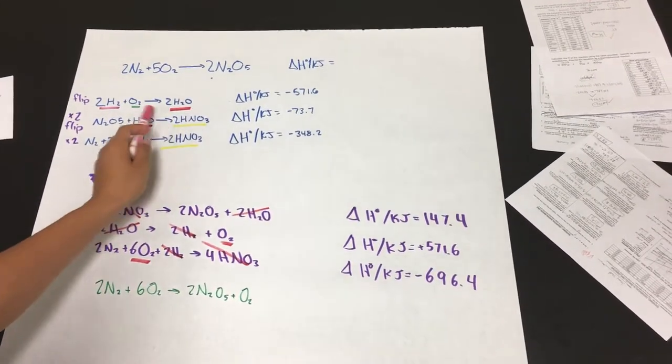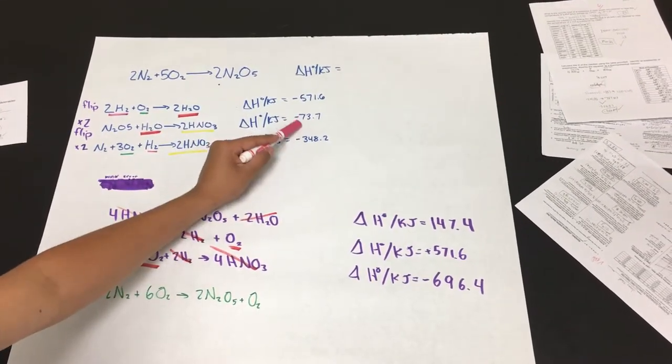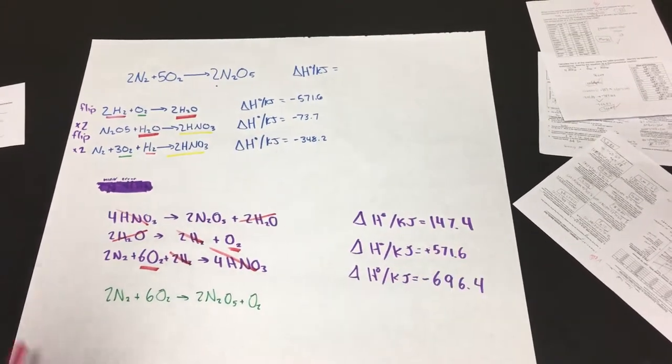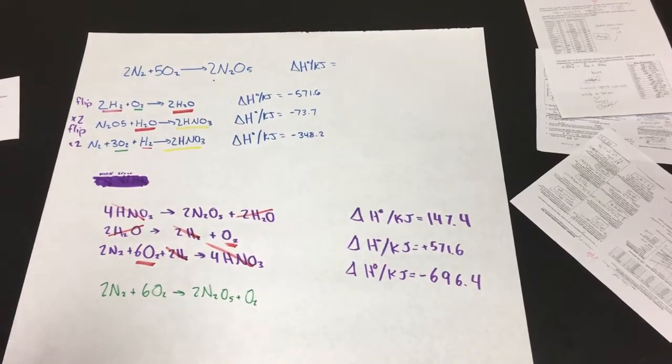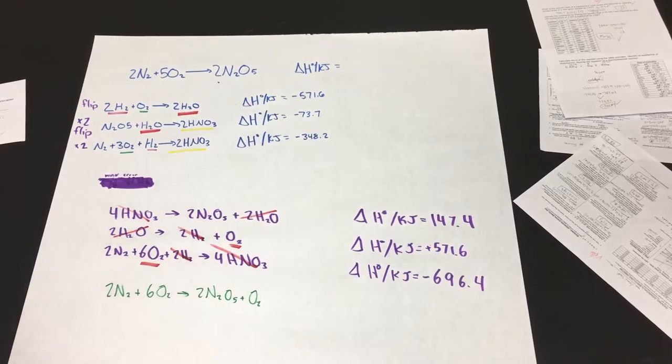Oh, and yes. When you, for this equation, when you multiply it by 2 and flip, this one becomes positive and you multiply it by 2. So it's 147.4. And when you flip this first equation, which is negative, and the specific heat is negative 571.6, you just get a positive 571.6.